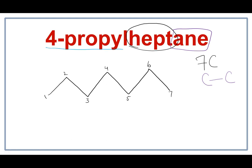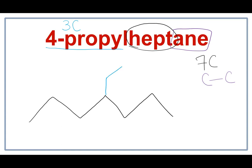4-propyl tells us that there is a propyl group attached on the fourth carbon. Propyl means that there is an attachment of three carbons. Let's get rid of these numbers and draw the propyl on the fourth carbon — that's methyl, that's ethyl, and that is propyl. This is the structure for 4-propylheptane.